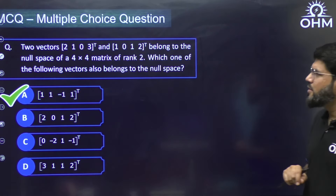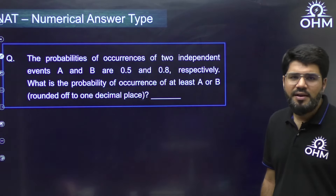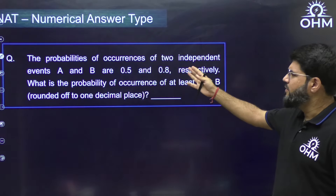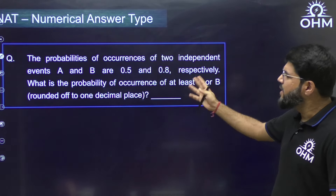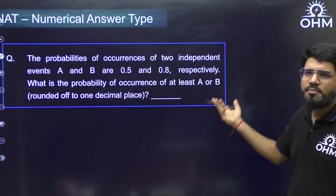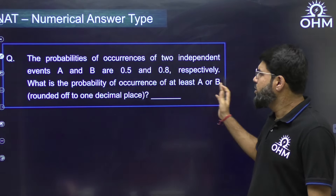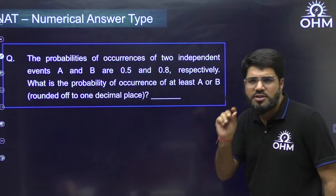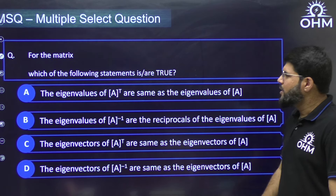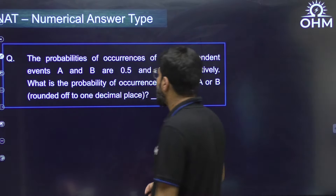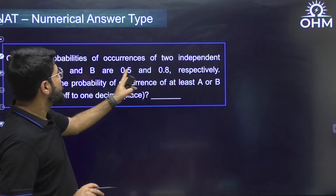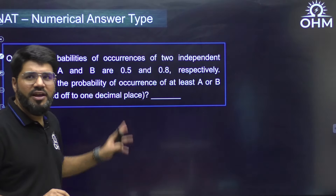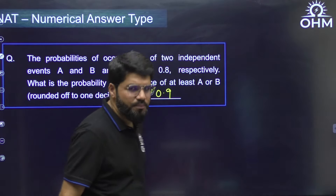The next category is NAT — numerical answer type. For example: the probabilities of two independent events A and B are given; what is the probability of at least A or B occurring? There are no options — you must calculate and enter a numeric value. Using P(A) + P(B) − P(A∩B), and since they're independent, P(A∩B) = P(A)×P(B). So the answer is 0.5 + 0.8 − 0.4 = 0.9, which you enter directly.